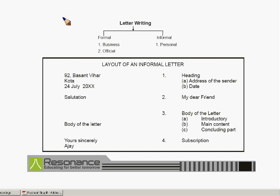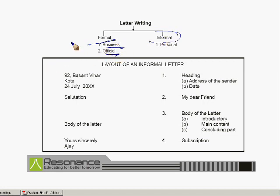Letter writing is broadly classified into two categories. First of all, formal letters, and the second one is the informal letter. As far as formal letters are concerned, we have business letters and official letters. Whereas in informal letters we have personal letters. First of all we should know what is the difference between formal and informal letters.